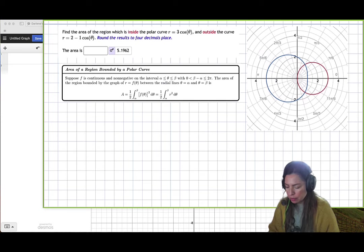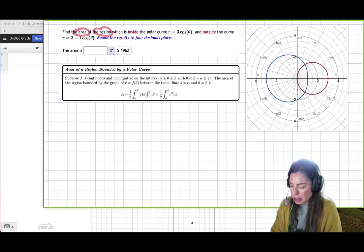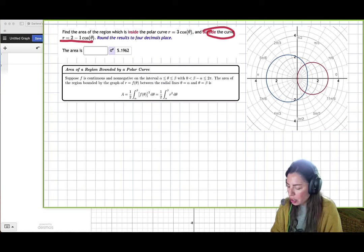What we're going to be doing here is finding the area of a region inside the polar curve 3 cosine theta and outside the curve 2 minus 1 cosine theta. And then we'll round our answer in the end.